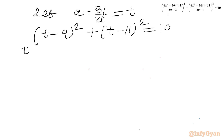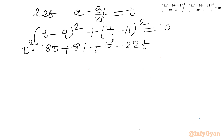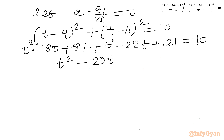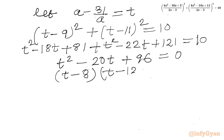Let us expand. So T² minus 18T plus 81 plus T² minus 22T plus 121 equal to 10. Once I simplify the left-hand side, I will get the quadratic equation 2T² minus 40T plus 192 equal to 10, which simplifies to T² minus 20T plus 96 equal to 0. The factors are (T - 8)(T - 12) equal to 0, so T equals 8 or T equals 12.